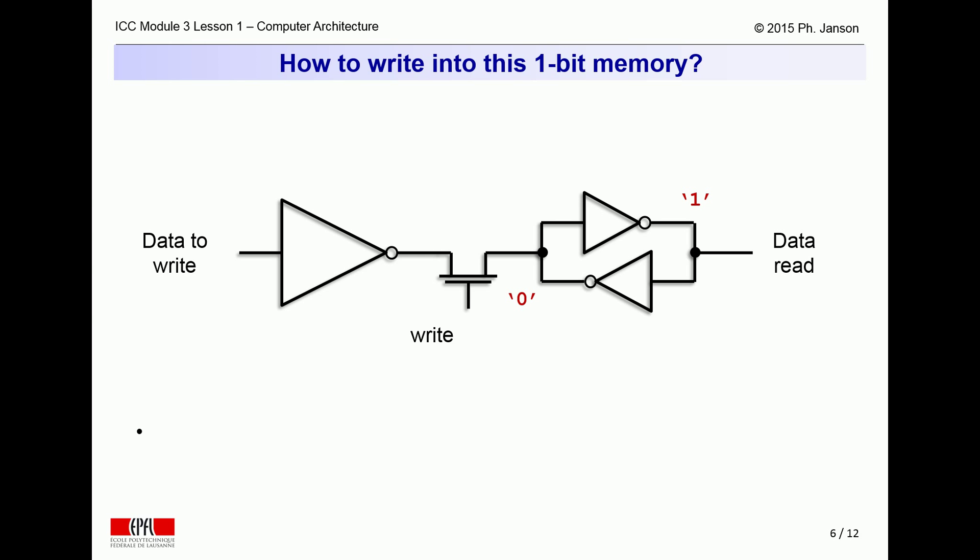Remembering the state of a bit is great, it can be read any time. However, computers also need to write into a bit of memory. So how can this be done? In order to allow a computer to write into such a memory cell, one prefixes the bistable circuit with another NOT gate and an intermediate transistor, as shown on this slide.